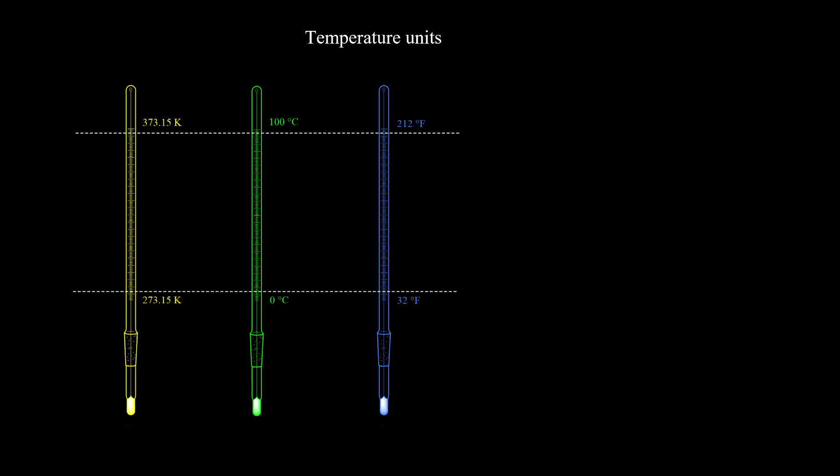First I'm going to start with Celsius, shown in green color in the middle. For Celsius, the freezing point of water is 0°C and the boiling point is 100°C, so between them there is a 100-degree range. Celsius is more common than Fahrenheit or Kelvin and is mostly used in chemistry and physics textbooks.